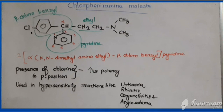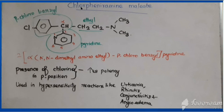Chlorpheniramine is used in hypersensitivity reactions like urticaria, rhinitis, conjunctivitis, and angioedema. Comparing chlorpheniramine with diphenhydramine: diphenhydramine has two phenyl rings, whereas in chlorpheniramine one phenyl is replaced by pyridine; additionally, a chlorine is present in the para position; and the methoxy oxygen of diphenhydramine is absent in chlorpheniramine. So there are three structural differences between chlorpheniramine and diphenhydramine. Other drugs will be seen in the next class.